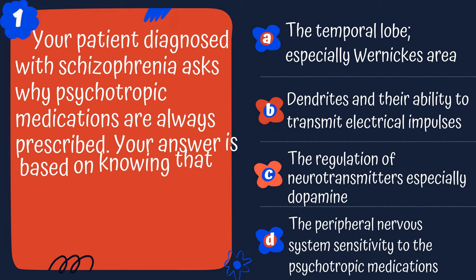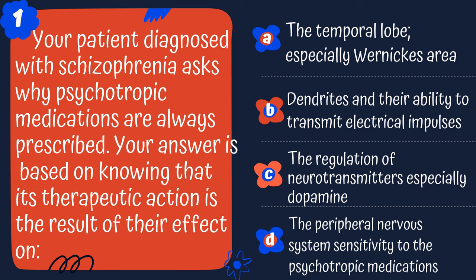Question 1. Your patient diagnosed with schizophrenia asks, why are psychotropic medications always being prescribed? Your answer is based on knowing that their therapeutic action is the result of their effect on: A. The temporal lobe, especially Wernicke's area. B. Dendrites and their ability to transmit electrical impulses. C. The regulation of neurotransmitters, especially dopamine. Or D. The peripheral nervous system's sensitivity to the psychotropic medications.